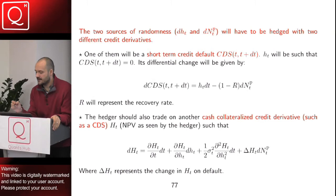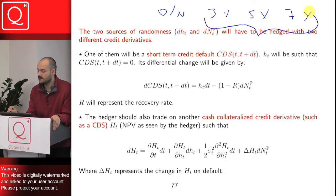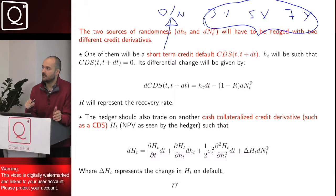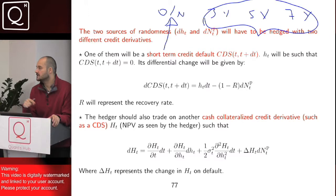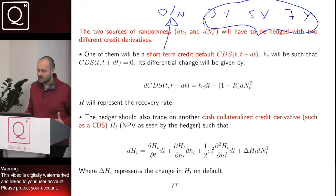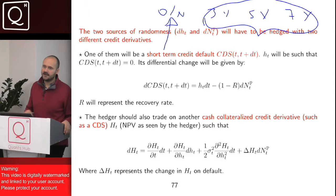Imagine for example that for a given reference credit, we have the overnight, the three years, the five years, and the seven years. Then everything is going to be a byproduct of these three rates, and we have the overnight credit default swap in order to match the jump-to-default component of our hedging portfolio. In this theoretical framework, we are going to assume that for this one-factor world, we have two credit default swaps available. To simplify the algebra, we assume one is short-term with an overnight maturity, and the other has a longer term — five years or whatever.